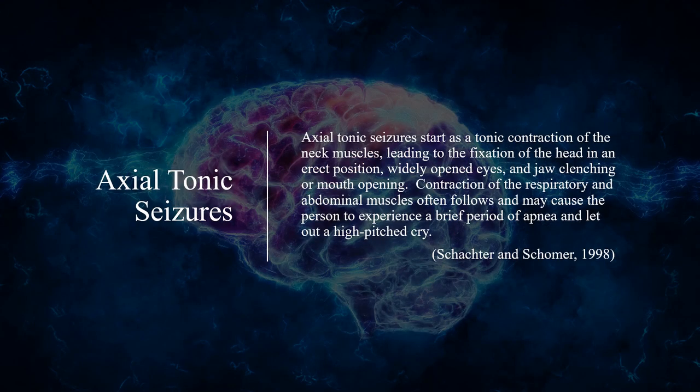Axial tonic seizures start as a tonic contraction of the neck muscles, leading to the fixation of the head in an erect position, widely opened eyes, and jaw clenching or mouth opening. Contraction of the respiratory and abdominal muscles often follows and may cause the person to experience a brief period of apnea and let out a high-pitched cry.